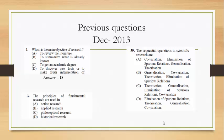The first question is, what is the main objective of research? To review the literature is a step in the research, it's not the objective. To summarize what is already known is not again a research. It's a step in research, but it's not the objective.